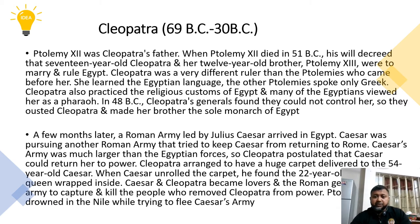When Ptolemy XII died in 51 BC, his will decreed that 17-year-old Cleopatra and her 12-year-old brother Ptolemy XIII were to be married and were to rule Egypt together. Cleopatra was a very different ruler than the Ptolemies who came before her. She learned the Egyptian language — the other Ptolemies spoke only Greek. But Cleopatra learned the language and practiced the religious customs of Egypt, and many Egyptians viewed her as a female pharaoh.